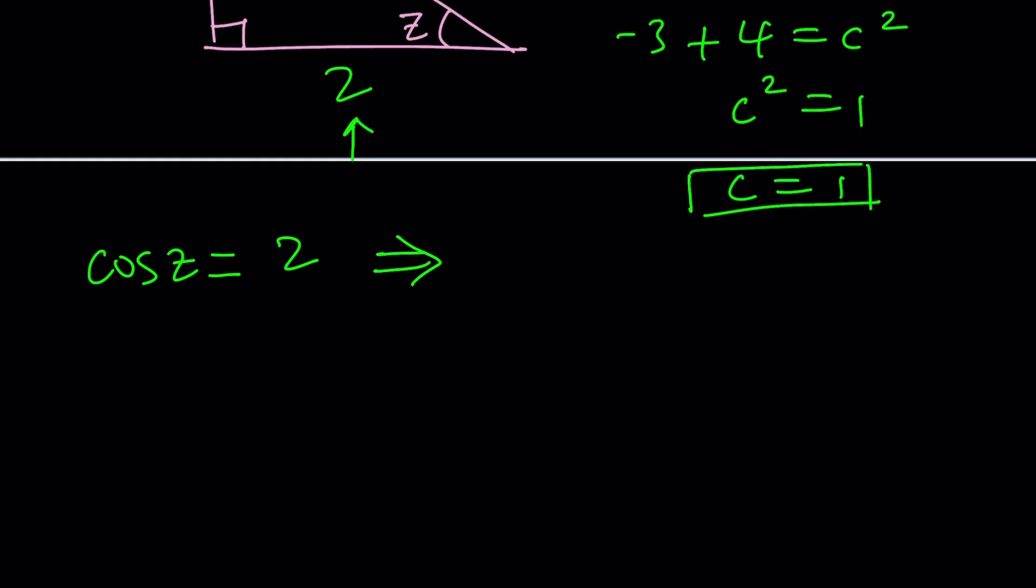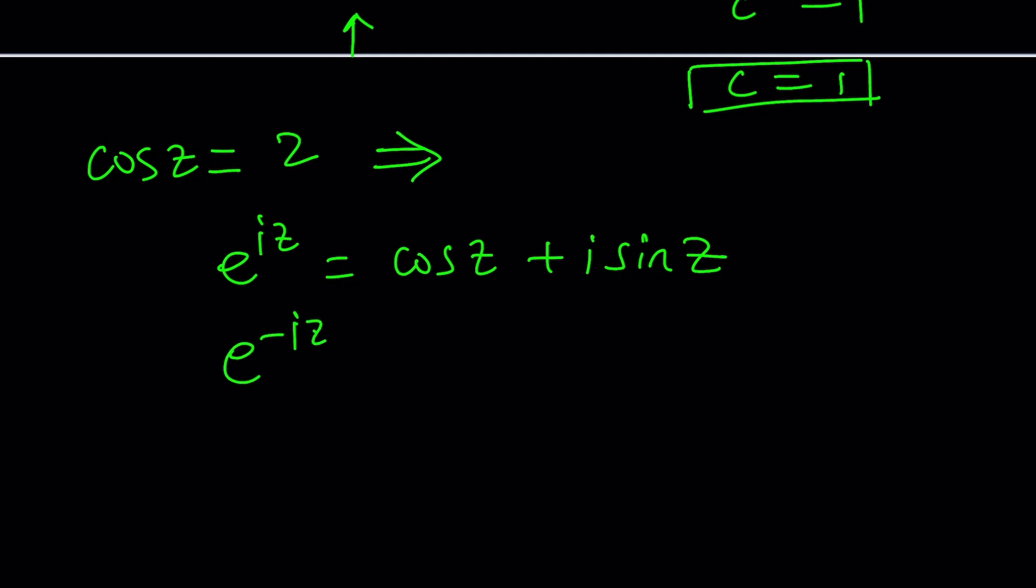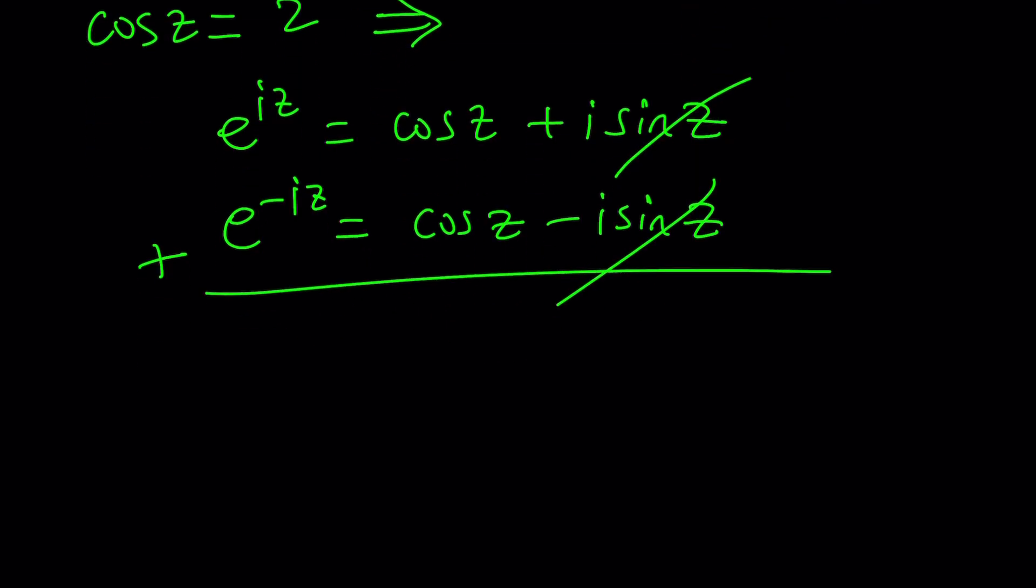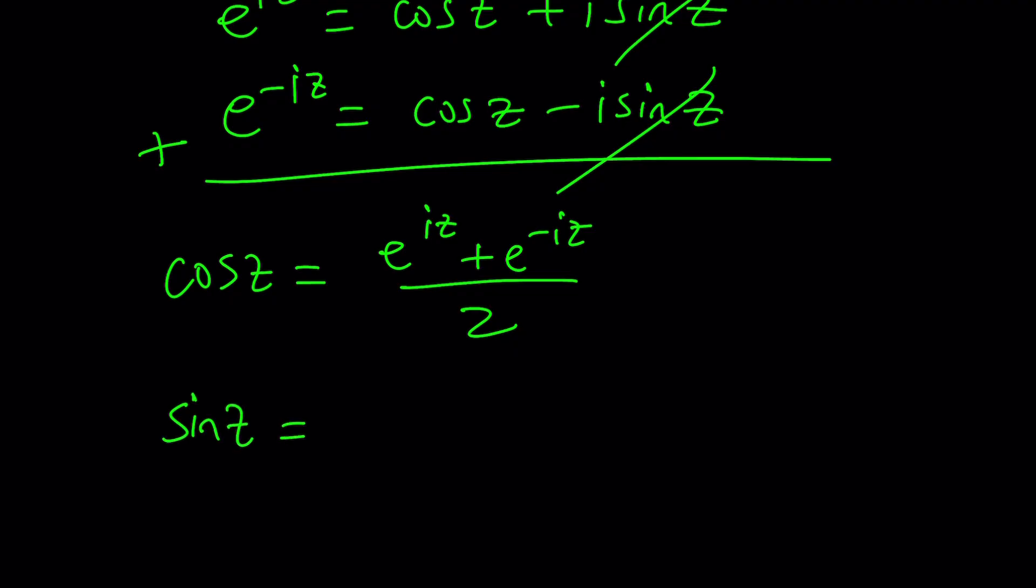We have what's called Euler's formula. e to the iz equals cosine z plus i sine z. What about replacing z with negative z? If you add these two equations and divide by 2, you get the following formulas. Cosine z is e to the iz plus e to the negative iz, and all of that is divided by 2. Similarly, we can find sine z, but we just subtract and divide by 2i instead of 2.